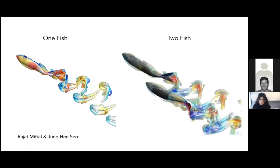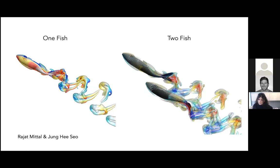These questions are difficult partly because the physics itself is difficult—computing fluid-structure interaction in fish is expensive. Here I'm showing two examples of one fish and two fish from Rajat Mittal and Jungyu Seo at Johns Hopkins University, where they showed beautiful 3D wakes of a single fish and an interacting pair. These computations are expensive as-is and expensive to scale up to many interacting fish.